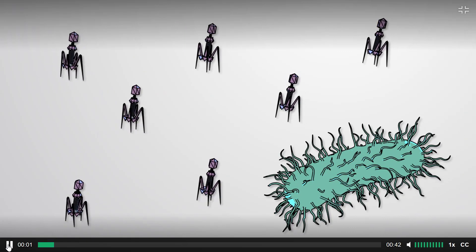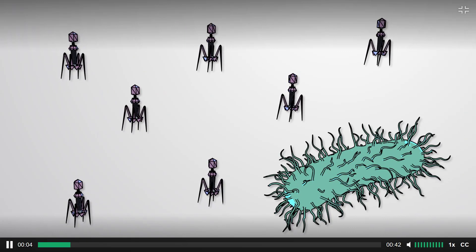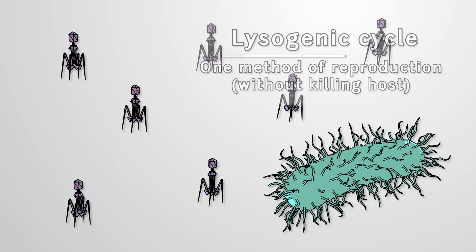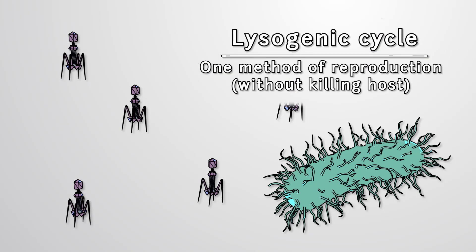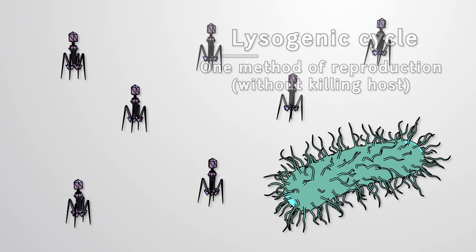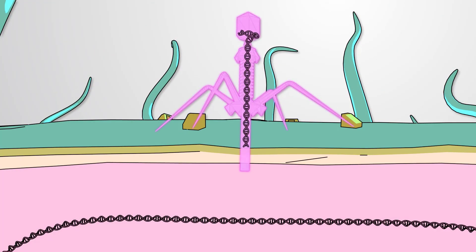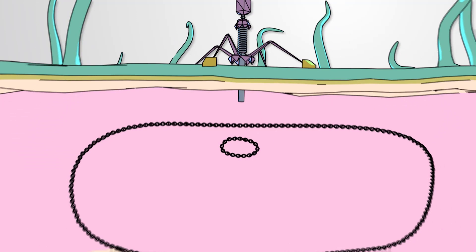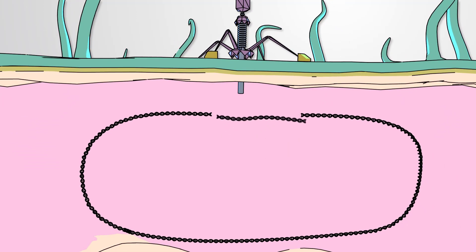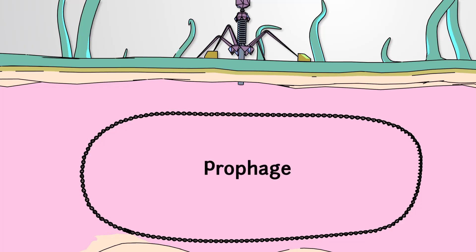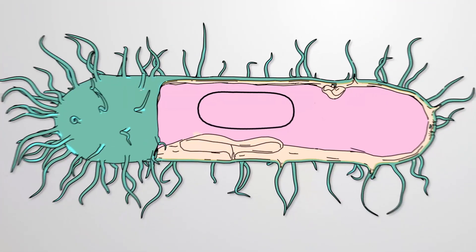When large numbers of bacteriophages are present, they can enter an alternative replication mode - the lysogenic cycle - where phages can reproduce without killing their host. This cycle begins much like the lytic cycle. The phage first attaches to the host cell and injects its DNA. However, once inside, the phage DNA recombines and integrates with the bacterial genome, forming a prophage. The prophage itself is not active and does not drive production of new phages. Rather, when the host cell divides, it's replicated along with the host DNA.